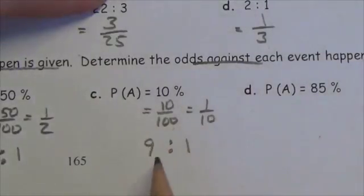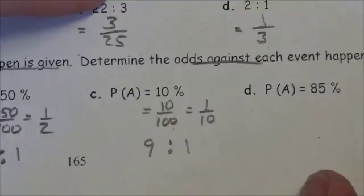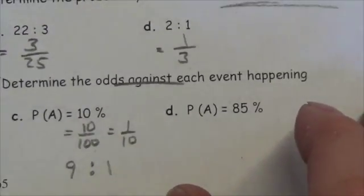So the odds are 9 to 1 against an event happening.